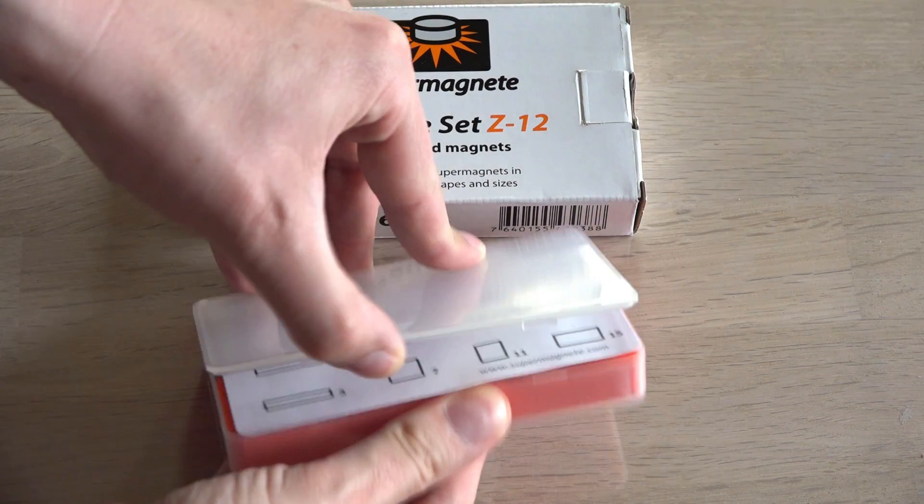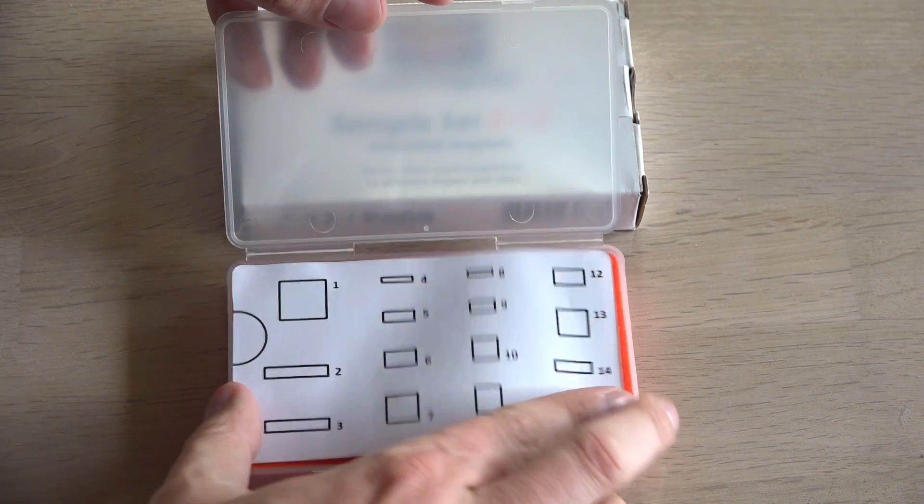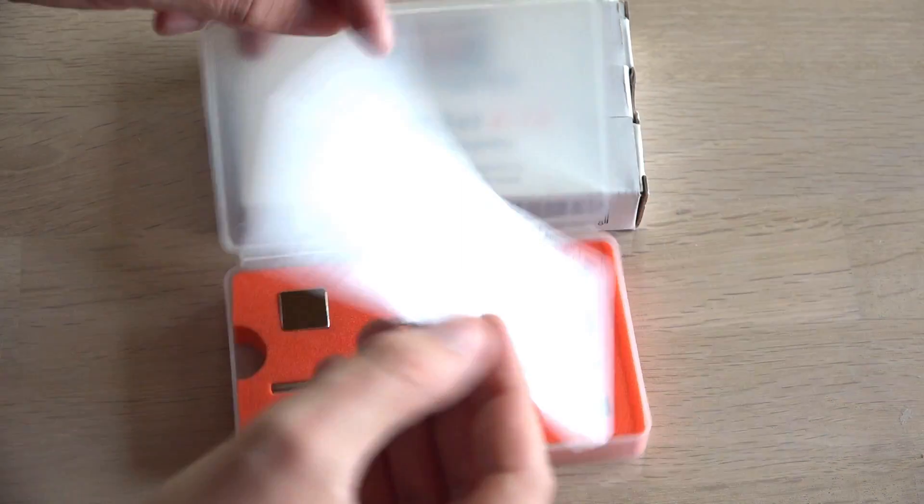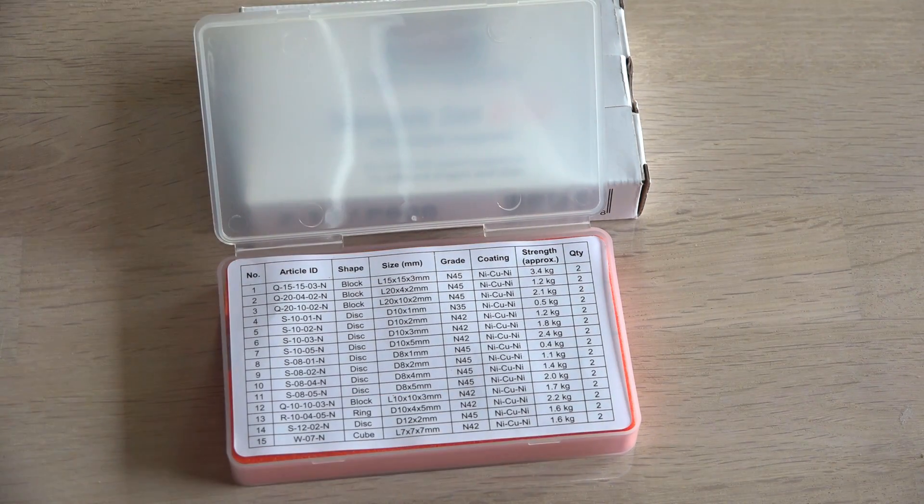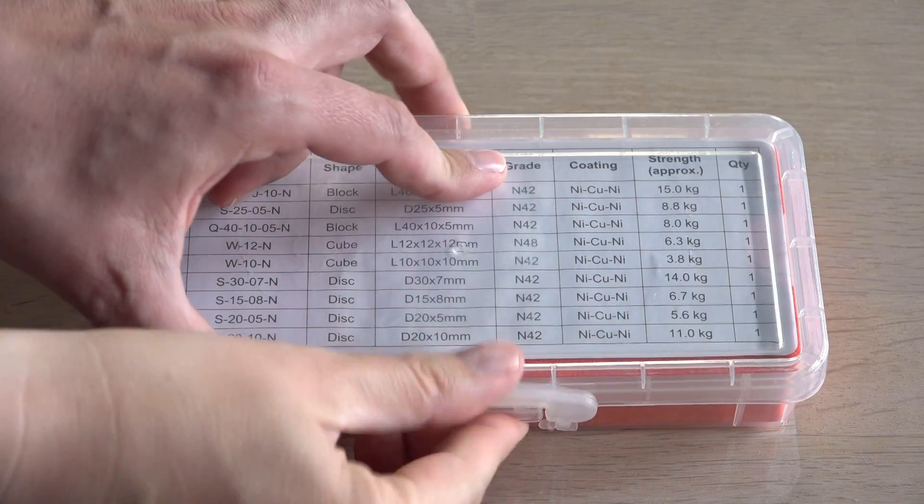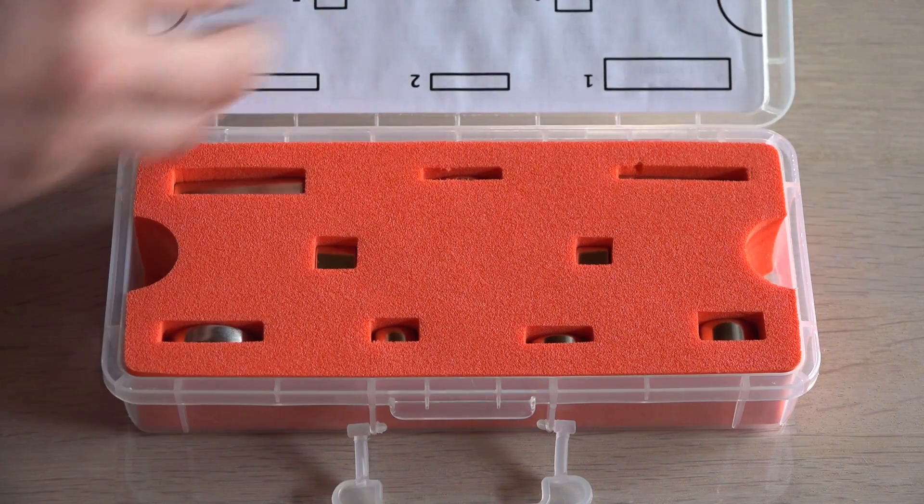The medium set is more powerful and may be the best choice for most. But for the same price you can get the set with larger magnets. This set includes some nice disc magnets and is highly recommended.